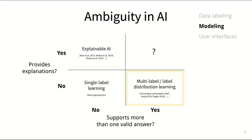Other methods like multi-label learning or label distribution learning do support mapping of a single input example to more than one valid output. This can be useful, for example, when assigning multiple genres to a single movie. But again, that upper right quarter remains underexplored.